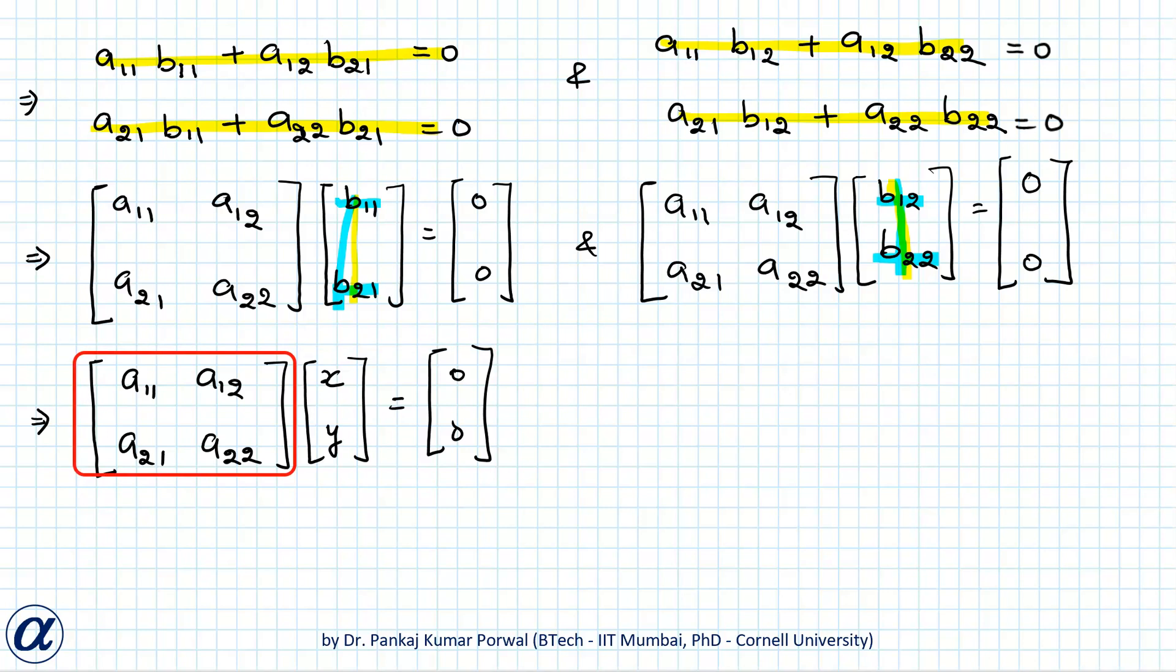And the coefficient matrix is nothing but our matrix A, so this implies that determinant of A is zero.